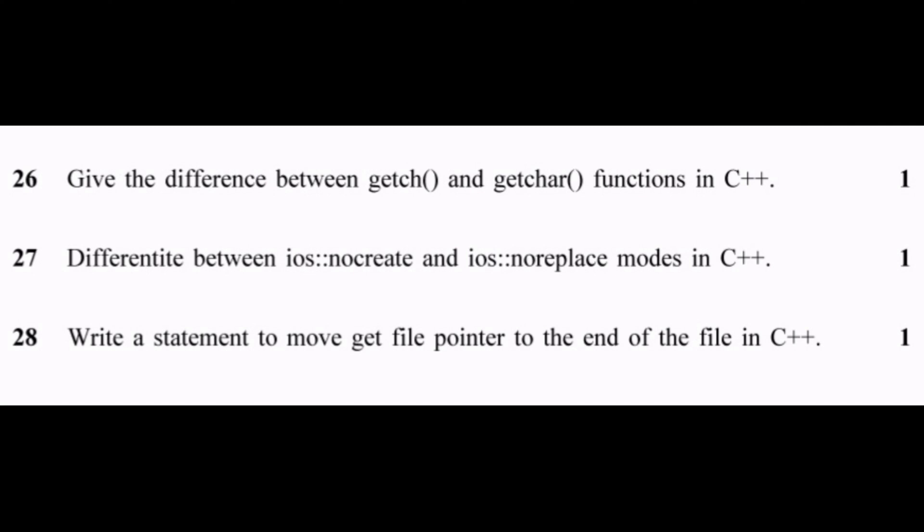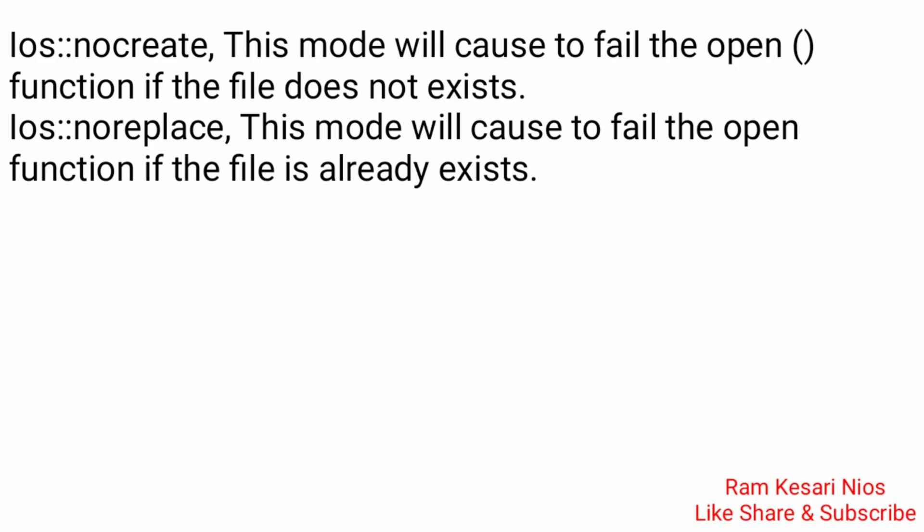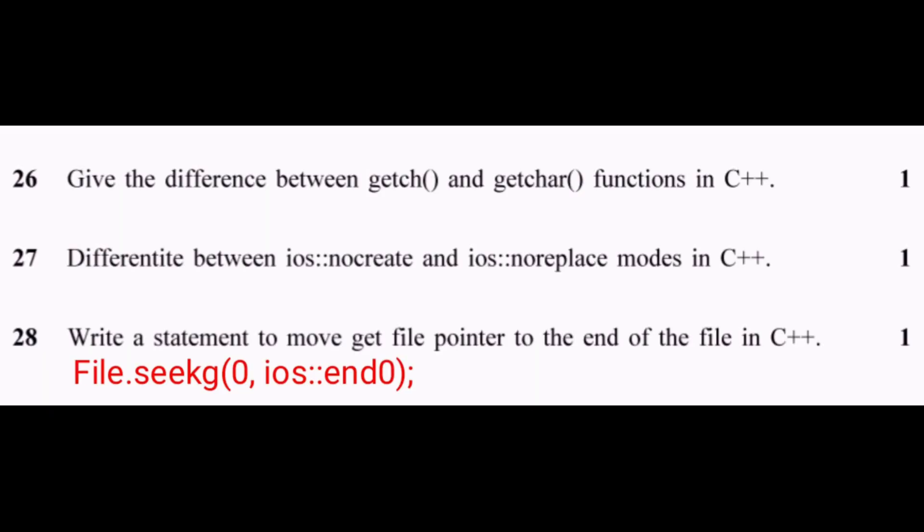Question 27: Differentiate between ios::nocreate and ios::noreplace modes in C++. ios::nocreate: this mode will cause the open() function to fail if the file does not exist. ios::noreplace: this mode will cause the open() function to fail if the file already exists. Question 28: Write a statement to move the get file pointer to the end of the file in C++: file.seekg(0, ios::end);